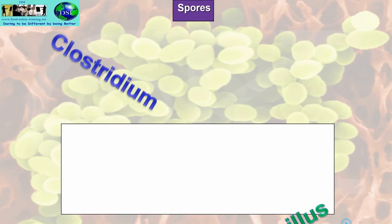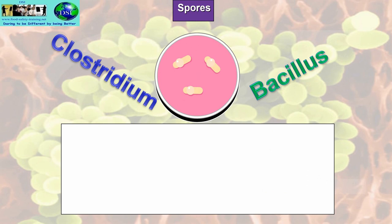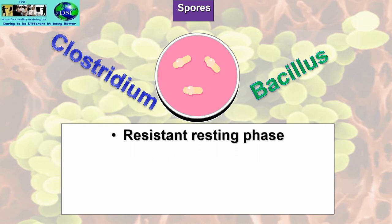Only two families of bacteria produce spores: Clostridium and Bacillus. What are spores? It's called the resistant resting phase of these two bacterial families. Where most bacteria are killed through heat, radiation, chemicals, or disinfection, Clostridium and Bacillus will not die — they'll turn into spores. More precisely, the spore is already present inside the bacterial cell, and under unfavorable conditions the bacterial cell dies off and the spore comes into being.